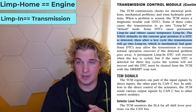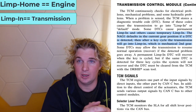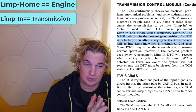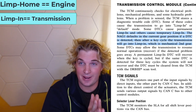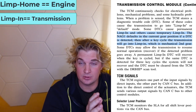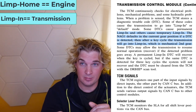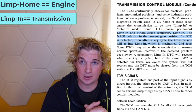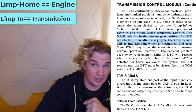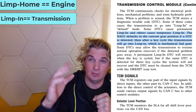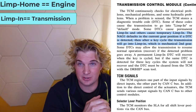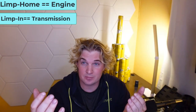Number two: limp in mode is a transmission-related issue. Defining characteristics: your van won't shift gears. You can go reverse, you can go forward in second gear, but that's it. Your van's not going to automatically shift. You can redline the RPMs, but you're not really going to be able to go over 40 miles an hour because your van won't shift.